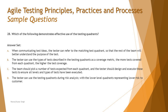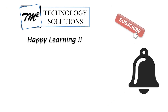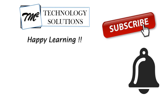Putting it all together, the right answer is A — when communicating test ideas, the tester can refer to the matching test quadrant so the rest of the team better understands the purpose of the test, correlating whether it's unit, integration, system, or acceptance, and who is responsible. That's what we discuss in testing quadrants. We've had a good glimpse of chapter three questions — more will follow in upcoming tutorials. Feel free to comment below with any queries. Keep learning, keep exploring — thanks for watching and happy learning!